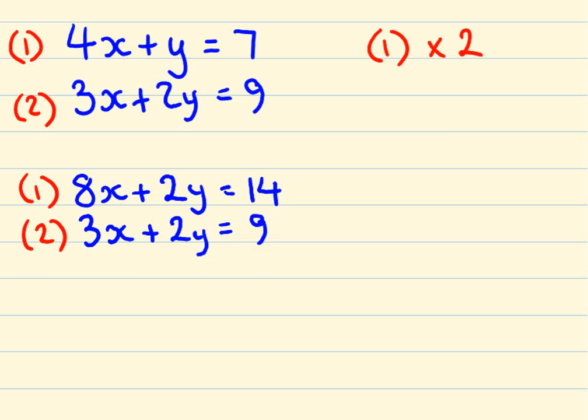Now what we can do is we can take one of the equations from the other. And you can see this, we can go 8x take away 3x and it gives us 5x. 2y take away 2y, these guys cancel each other out. And 14 take away 9 gives us 5. So 5x equals 5, that means x equals 1.